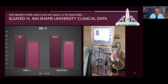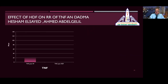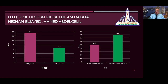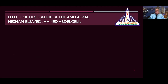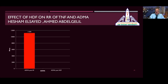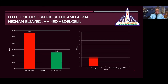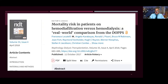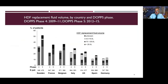We showed that beta-2 microglobulin could be removed by 82 percent. Tumor necrosis factor could be removed easily with the hemodiafiltration technique using permeable dialysis membranes. Asymmetric dimethylarginine could also be removed between high flux and hemodiafiltration technique. The mortality risk in patients on hemodiafiltration needs more attention as volumes and proportions are changing worldwide.